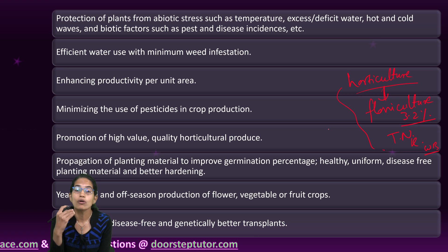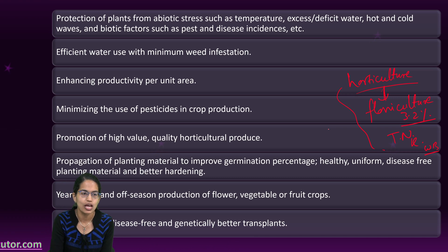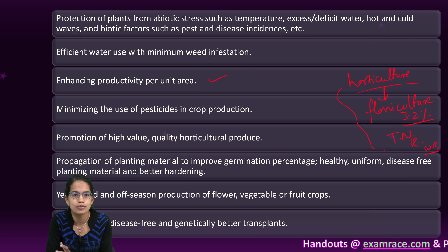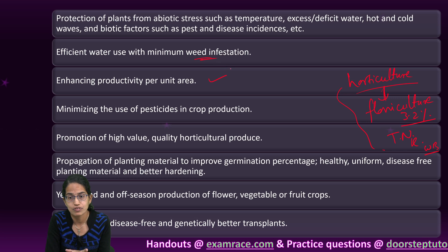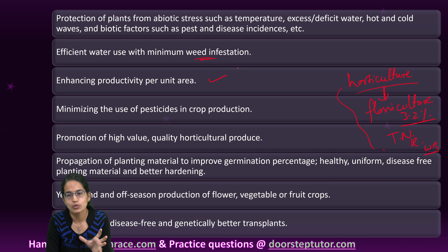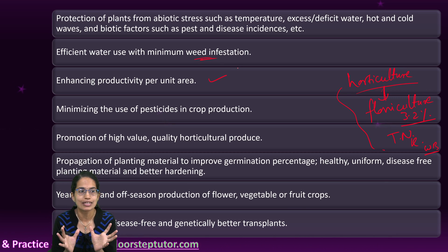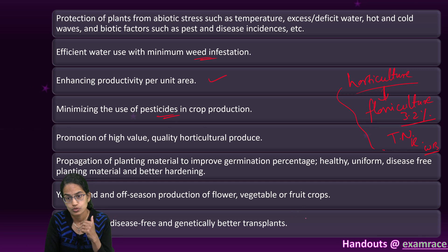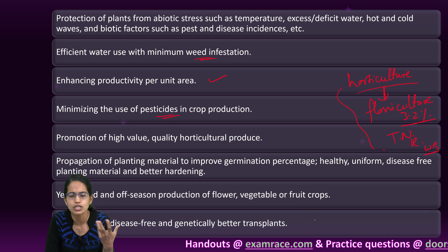What are the objectives and ideas behind protected cultivation? The idea is that productivity would be increased, less area would be required, weed infestation would be controlled, and we can control external parameters such as water, temperature, light, and the incidence of disease. We can minimize the use of pesticides and achieve year-round growth of fruits, vegetables, trees, and flowers.